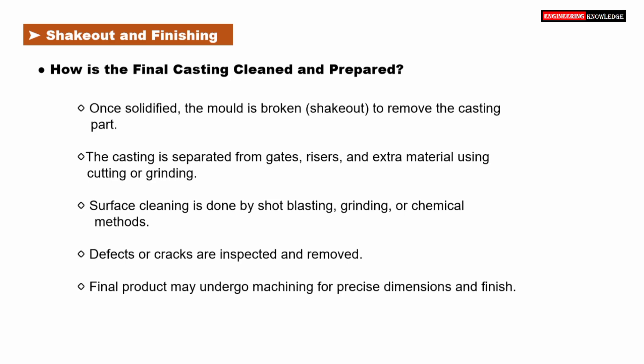Once the casting has solidified, it's time for shakeout and finishing. The mold is broken to remove the solid metal casting. Then the casting is separated from gates, risers, and any extra material using cutting or grinding tools. After that, the surface is cleaned using shot blasting, grinding, or sometimes chemical methods.